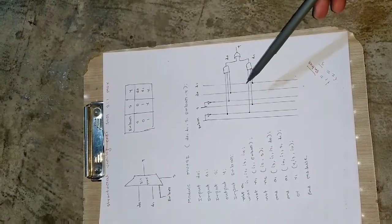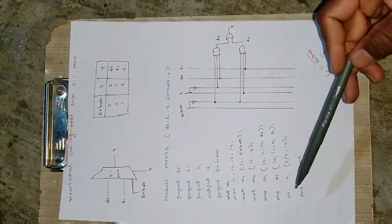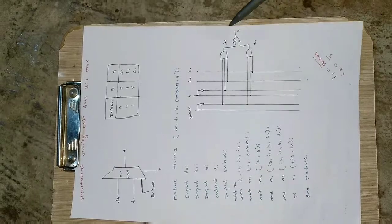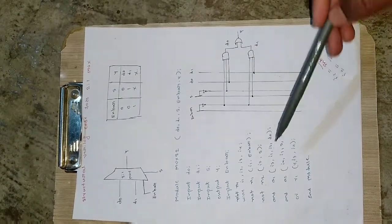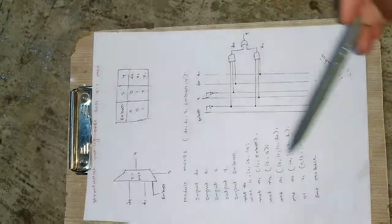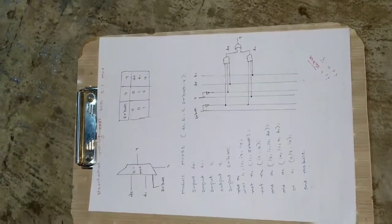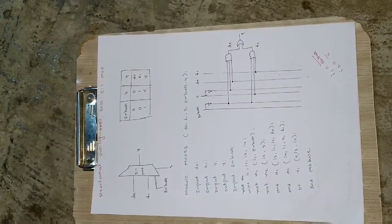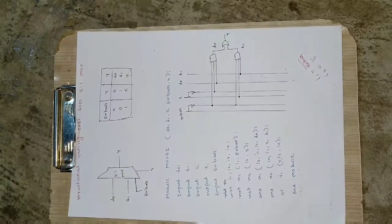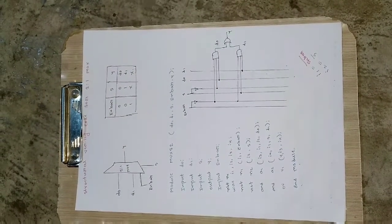Finally, the OR gate sums up the outputs: 'or r1 (y, i3, i4)' — output is y and inputs are i3 and i4. Then we close with endmodule — anything outside endmodule is not executed and is treated as garbage by the Xilinx simulator. This is how a simple structural Verilog program can be written using a block diagram and gate-level representation. Please subscribe and like the video if you found it helpful, thank you for watching.